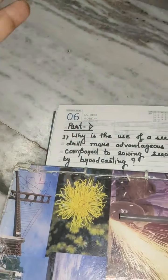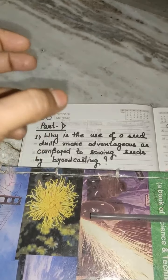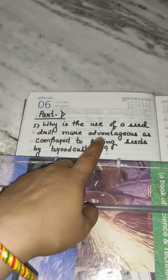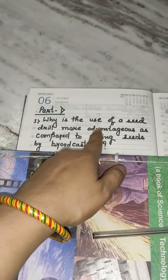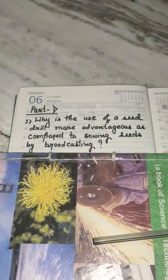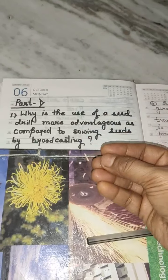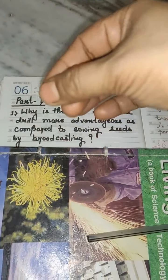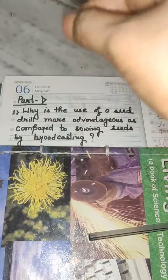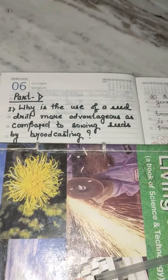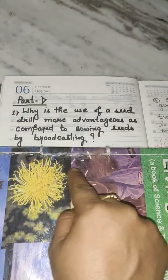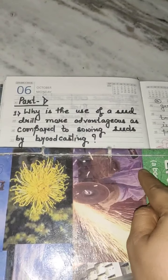Broadcasting is the method of sowing seeds manually, just by spreading the seeds with the hand. When seeds are sown manually there may be a chance that sowing will not be at a proper distance and proper depth. But when we use a seed drill, the distance maintained between the seeds will be uniform, and the seeds will also get a proper depth into the soil.